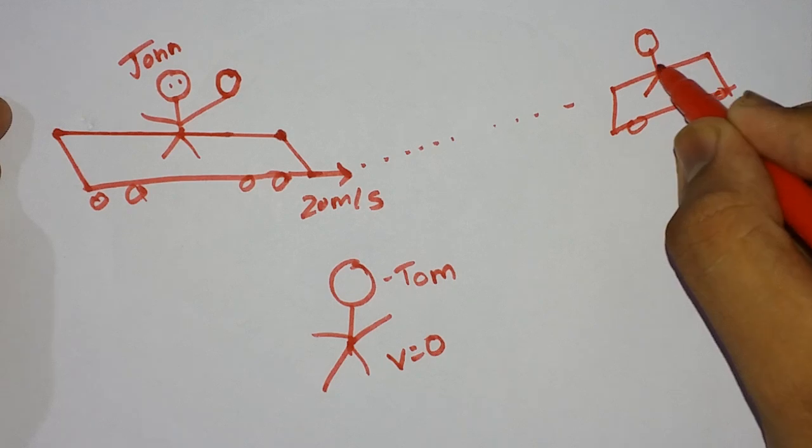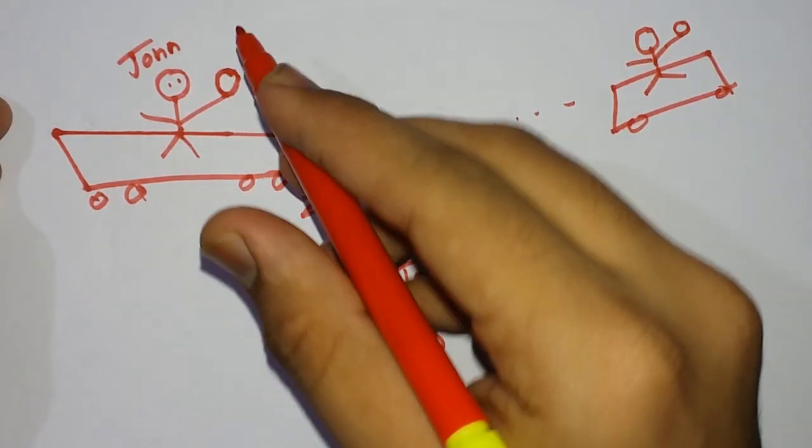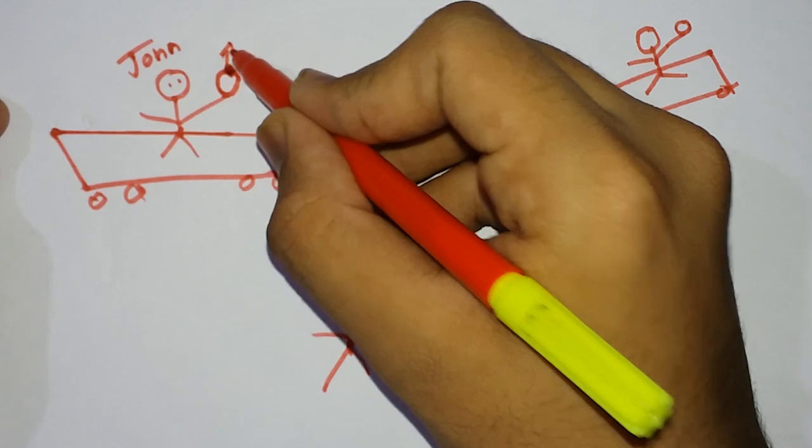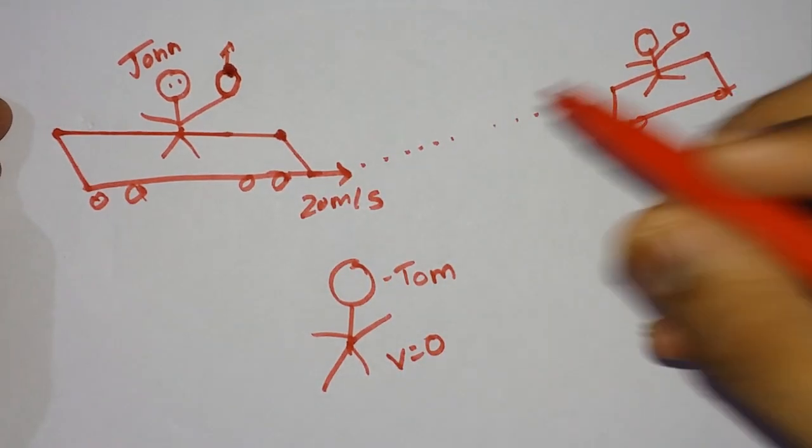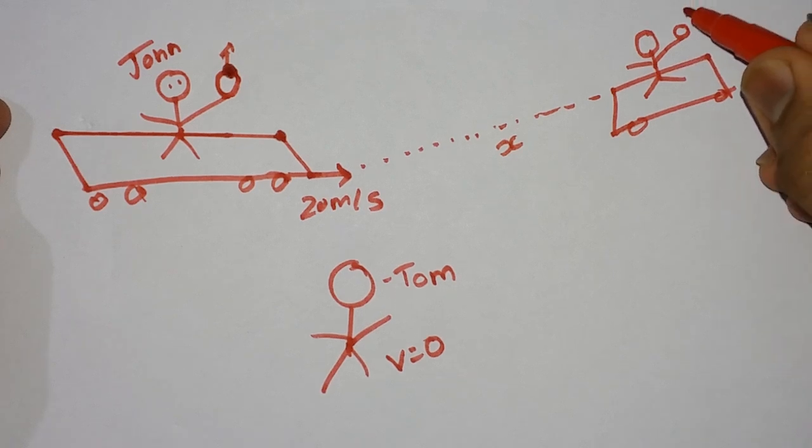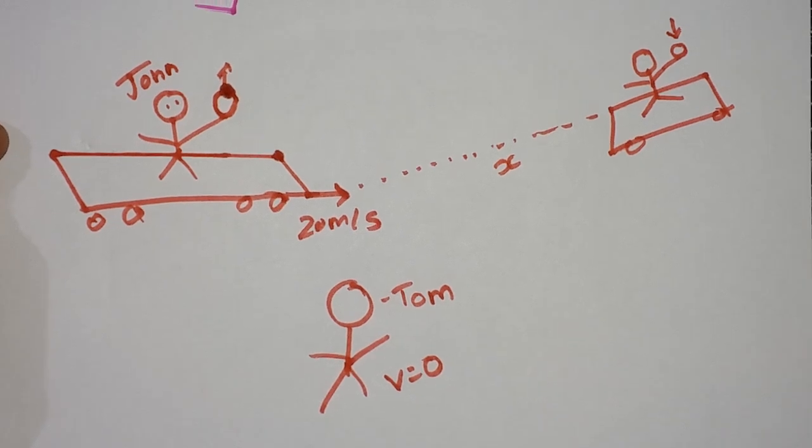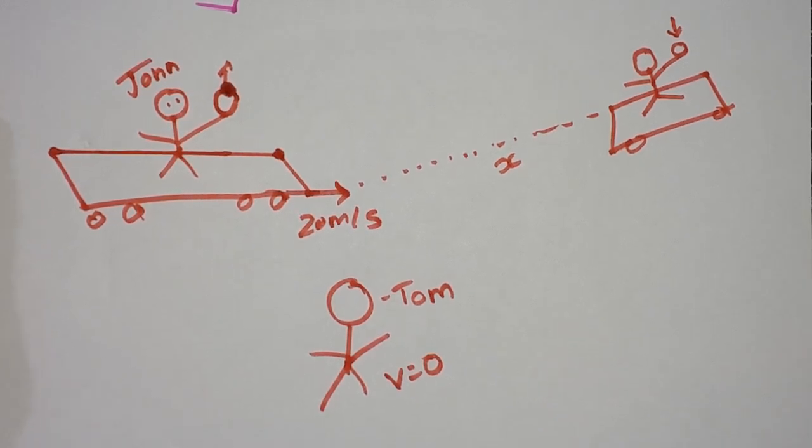John is still in the cart. He throws the ball up with some velocity, and at this point - at displacement X - the ball comes back to his hand. Now, what is simultaneity in events? What John sees versus what Tom sees. The event is the ball being thrown up.